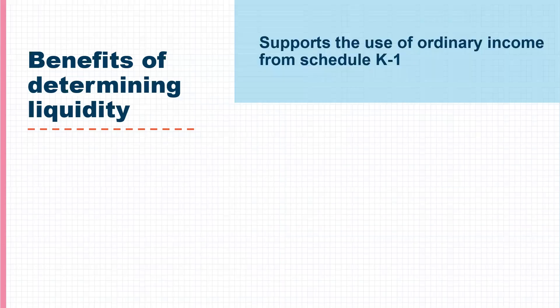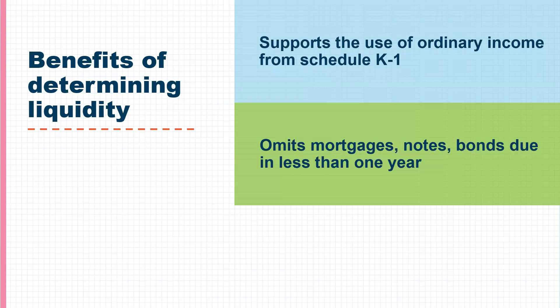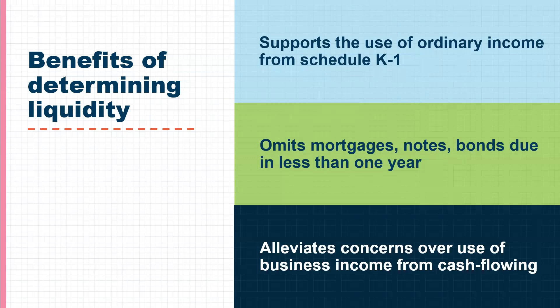What are some of the benefits of determining liquidity? The benefit you might be most familiar with is supporting the use of ordinary income from Schedule K-1. However, determining liquidity will also help us to omit mortgages, notes, and bonds due in less than one year. Lastly, determining high liquidity may help us to alleviate concerns over the use of business income from cash flowing or the use of business assets for closing.